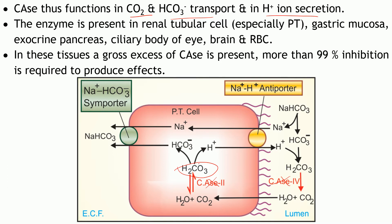The carbonic anhydrase enzyme is mainly present in the proximal tubular cells, but also located in the gastric mucosa, the exocrine pancreas, the ciliary body of the eye, the brain, and red blood cells. Since this enzyme is present throughout the body in quite large quantities, inhibition of this enzyme is a challenging task.